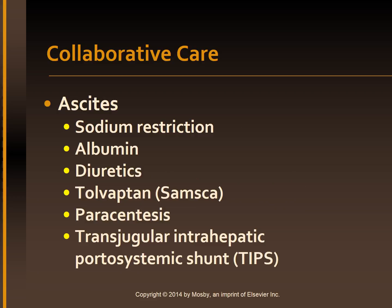Management of ascites is focused on sodium restriction, diuretics, and fluid removal by means of paracentesis. Fluid and electrolyte balance should be accurately assessed and monitored. Albumin infusion may be used to help maintain intravascular volume and adequate urinary output by increasing plasma colloidal osmotic pressure. Diuretic therapy is an important part of management. A combination of drugs working at multiple sites in the nephron is often more effective. Spironolactone is an effective diuretic even in patients with severe sodium retention.